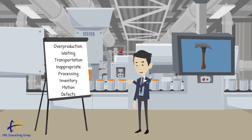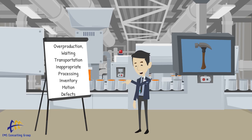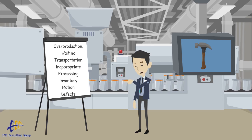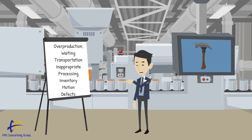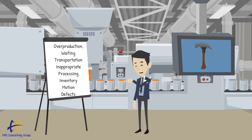Inappropriate processing is the next waste, and this one is within the process itself. Inappropriate processing is utilizing the wrong tool, system, or process to do the job, or having a workaround in place. A good example of this might be utilizing Microsoft Excel as a database.